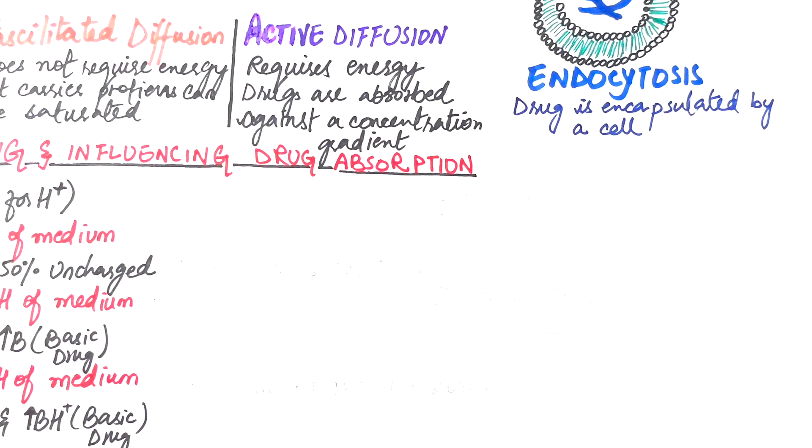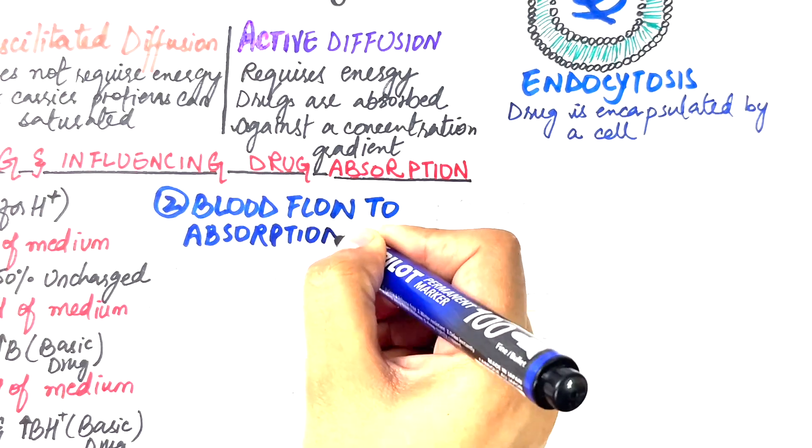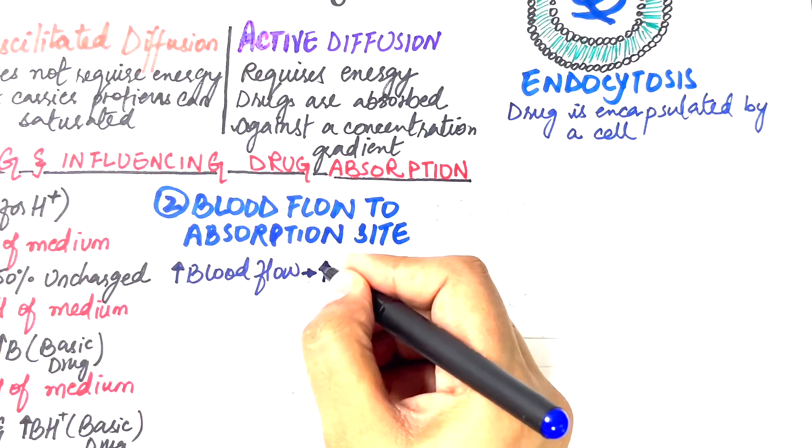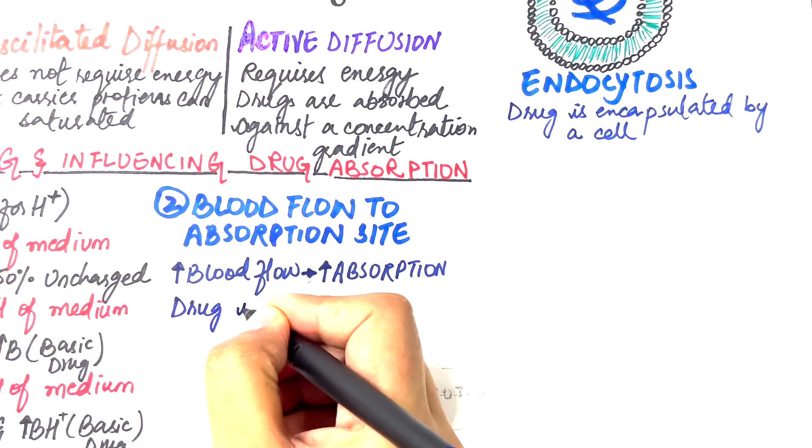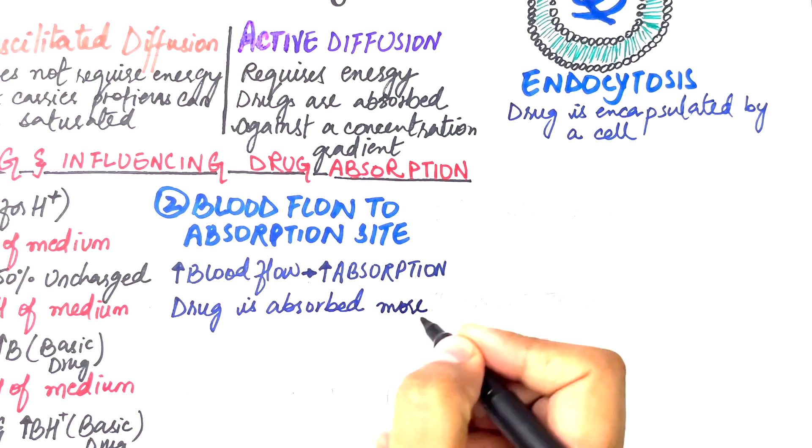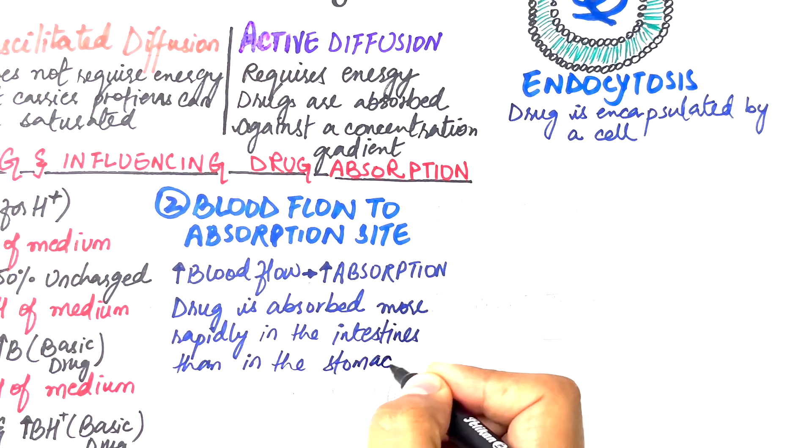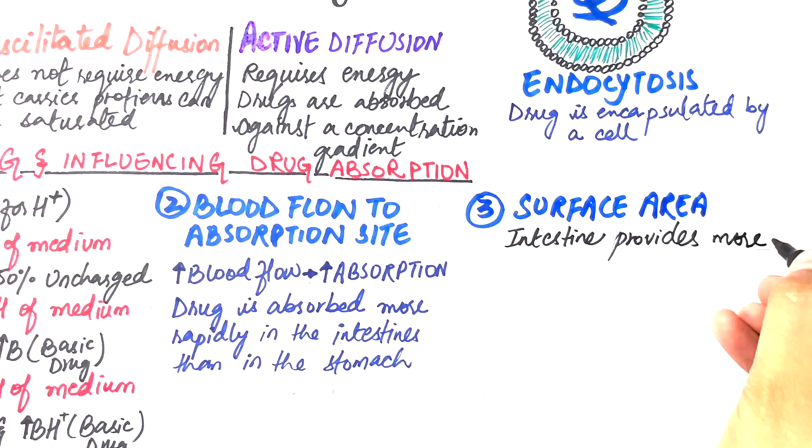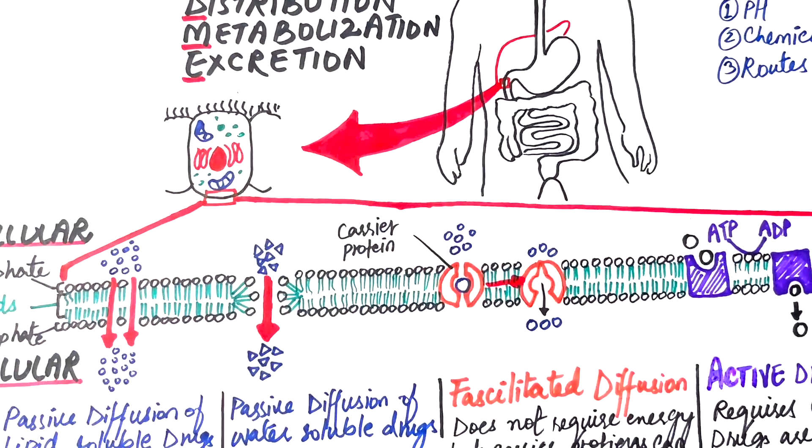The second factor is the blood flow to the absorption site. The higher the blood flow, the higher will be the absorption rate of the drug. The blood flow of the stomach is less than the intestine, so the drug is absorbed more rapidly into the intestines than within the stomach. Intestine provides a more surface area than the stomach as it has brush border or microvilli which increases the surface area of the intestine about thousand folds.